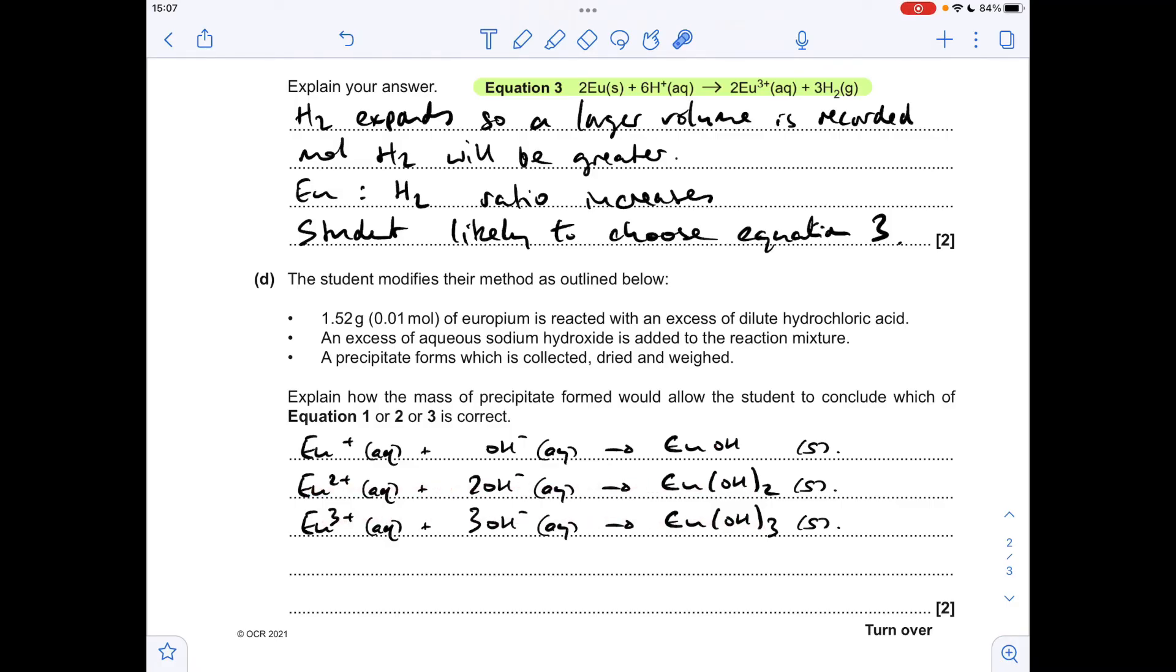Equation two, equation three. Now the thing to bear in mind is these will all have a different MR. So the student's using 0.01 moles of europium so therefore they would ultimately generate 0.01 moles of the hydroxide in each case.